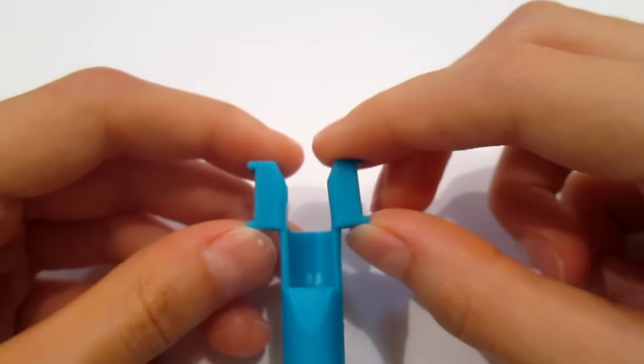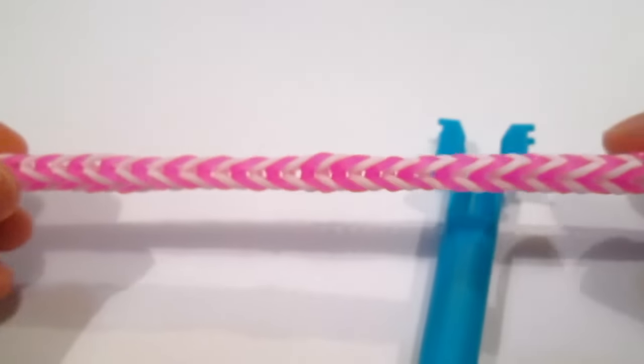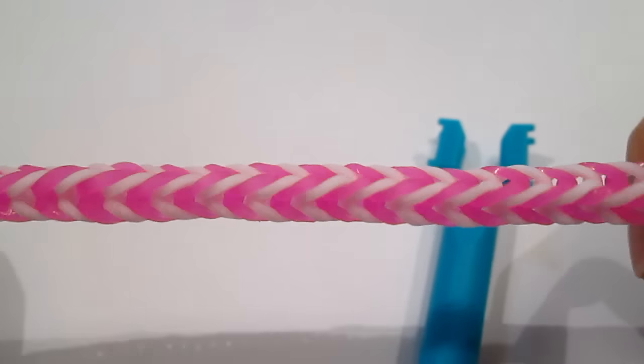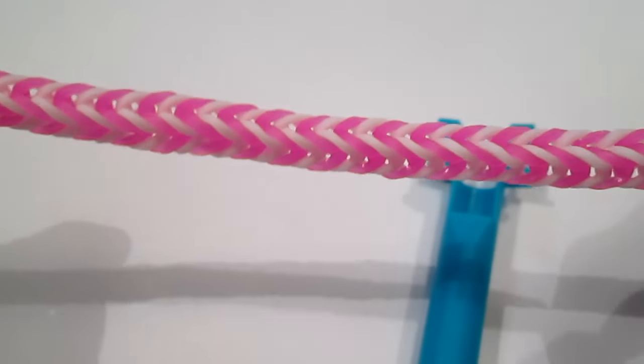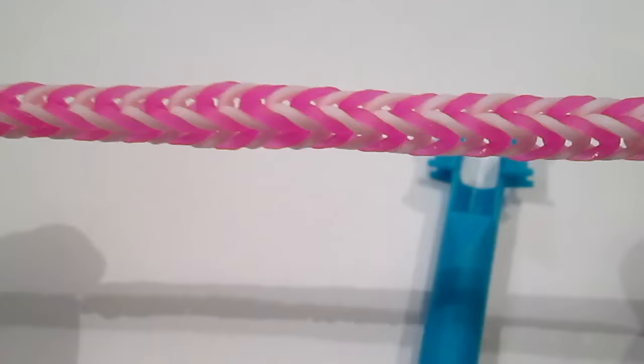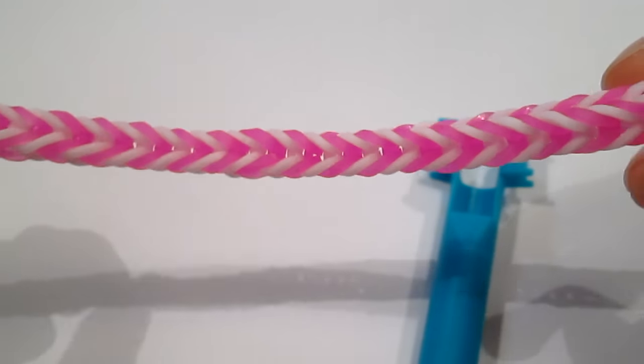So to begin, you first just make a regular old fishtail. And I forgot to mention this bracelet is based off the frozen bracelet by Rainbow Loom, so if you've made that, this should be pretty easy.